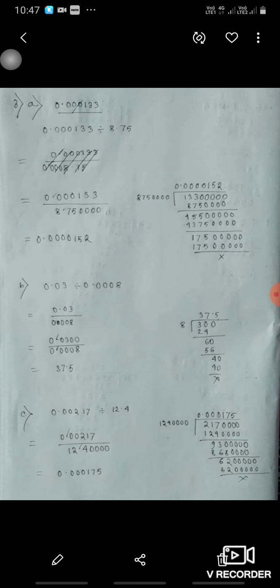Now c third, here same way only you have to divide 0.000133 divided by 8.75. So firstly we will remove the decimal and in that you will get 0.000152.